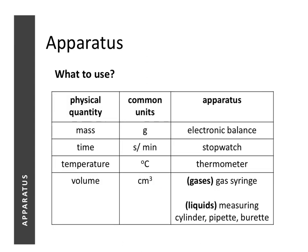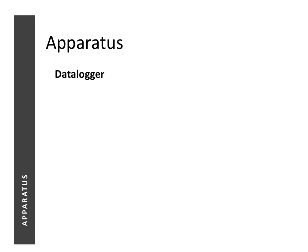One way to remember the four physical quantities is MTV — M, T, and V, or music videos. We need to know the apparatus needed to measure each physical quantity and the common units by which we measure them. At this point, I will introduce one more instrument we can use to measure these quantities, and I would call it a special weapon — the data logger.